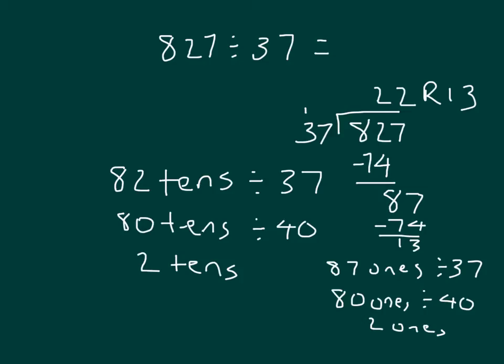How many ones remained? It was 13 ones that remained, and could we make another group of 37 with those 13 ones? No. So that's why our quotient there then is 22 with a remainder of 13.